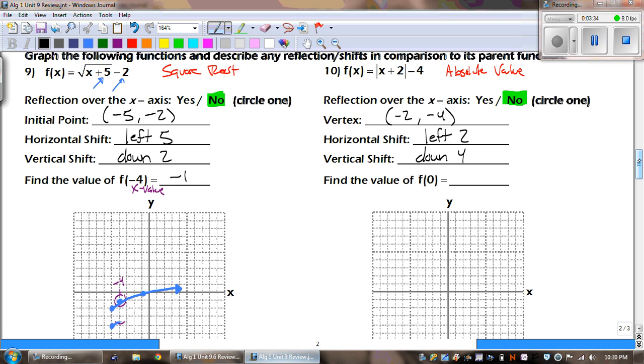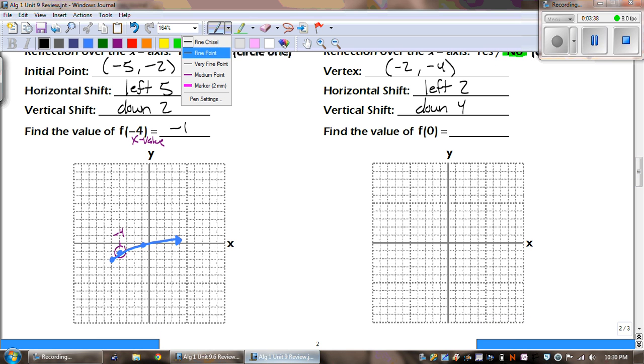Do you guys remember the pattern for absolute value? Let's find out. So I go left 2, down 4. And then we just go up 1, right 1, up 1, right 1, up 1, right 1. And then we do the same thing to the left. Up 1, left 1, up 1, left 1, up 1, left 1. And this is going to make a perfect V, which means the arms of this should be the same length.